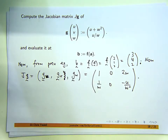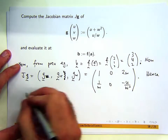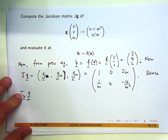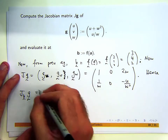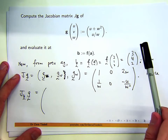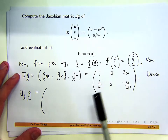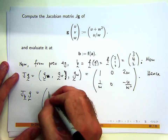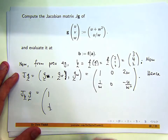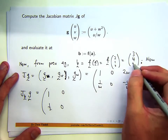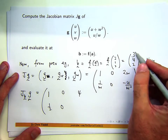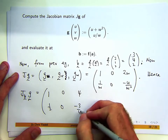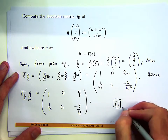At the point of interest b, we evaluate the Jacobian matrix at that point using subscript notation. With u=3, v=4, and w=2: the first column stays the same except 1/w gives 1/2. The v column remains all zeros. Then 2w gives 4, and negative u over w squared gives negative 3 over 4. That's the evaluated Jacobian of g at b.